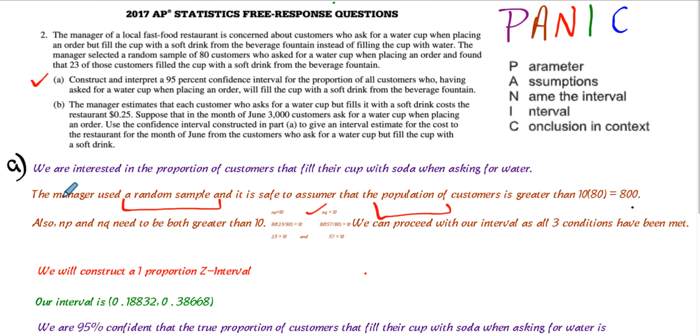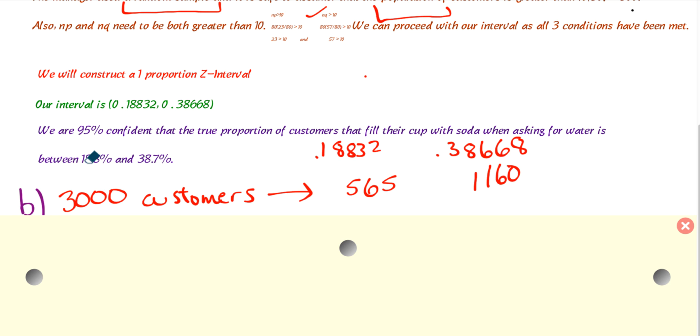Now, part B just takes it one step further. They're saying, suppose that 3,000 customers in the month of June ask for a water cup and they want you to estimate how much the company will lose if it's 25 cents per cup. So, that's not too difficult. If we take the 3,000 customers and we find 18 and 38% of 3,000, we're going to get 565 and 1,160. That's how many customers we can expect.